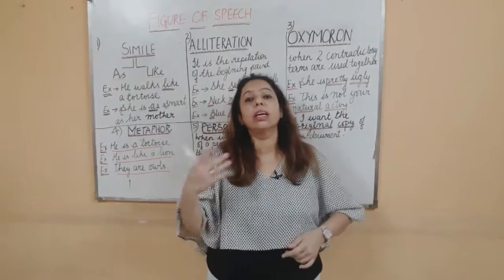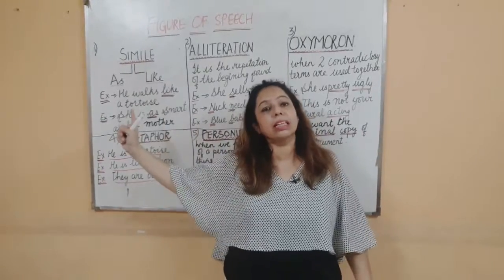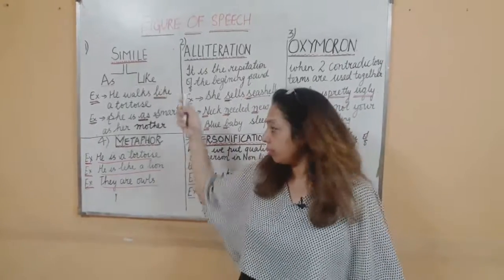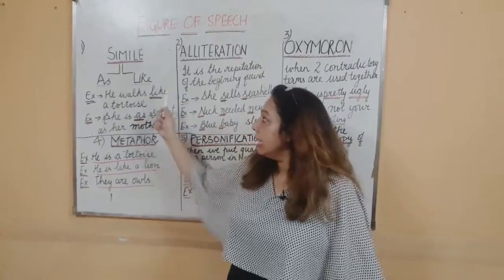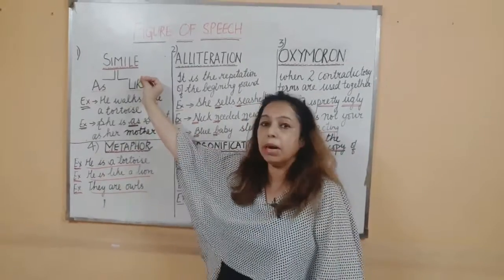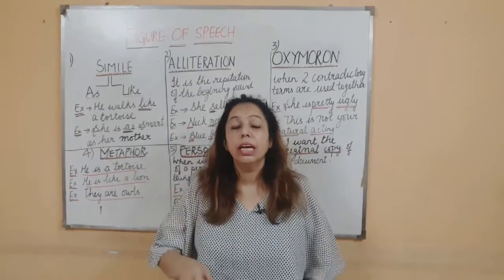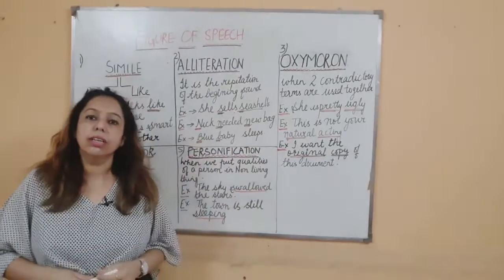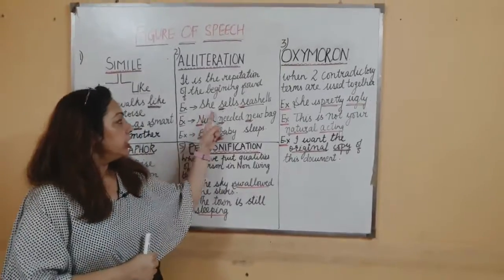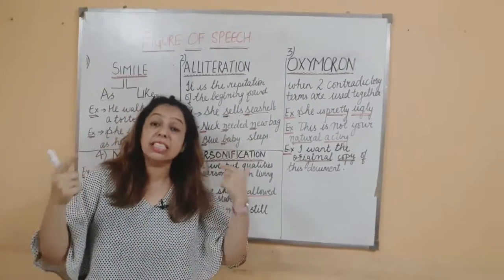This is part one and I will be uploading part two also. First is simile — the tip is to look for 'as' or 'like' in the sentence; if present, the figure of speech is simile. Next is metaphor — in simile you compare using 'as' or 'like', but in metaphor you directly make the subject that thing. 'You are eating like a monkey' is simile; 'You are a monkey' is metaphor. Next, alliteration — the first alphabet and its sound must both be the same. 'She sells seashells' — S, S, S.